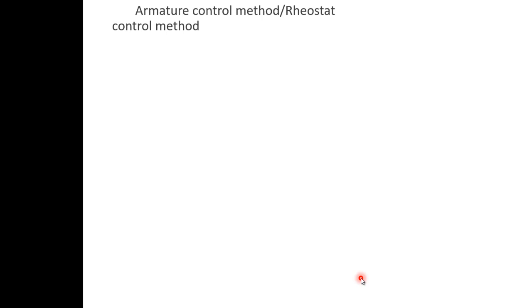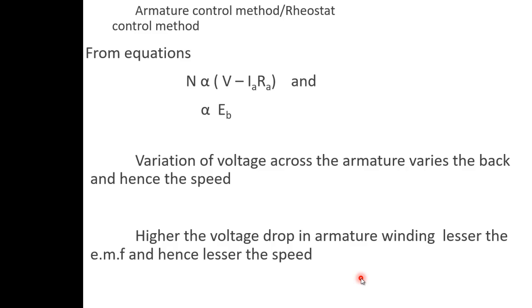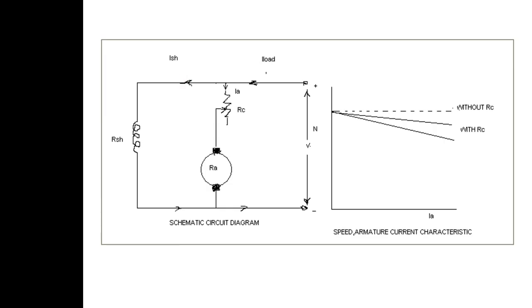Now we will see the armature control method, also called the armature rheostatic control or rheostat control method. From the equation, N is directly proportional to V − Ia×Ra, which equals Eb. So variation of voltage across the armature varies the back EMF and hence the speed. Higher the voltage drop in the armature winding, lesser the back EMF and hence lesser the speed.